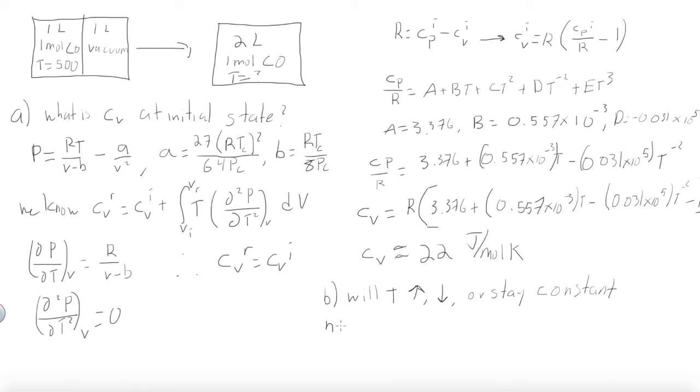So we know that there's the same number of moles in the beginning and at the end. So n is constant. Because we have one mole of carbon monoxide at the beginning and at the end. But the volume increases, because we have one liter that goes to two liters. And therefore, particles are further away from each other, because we still have the same number of moles.